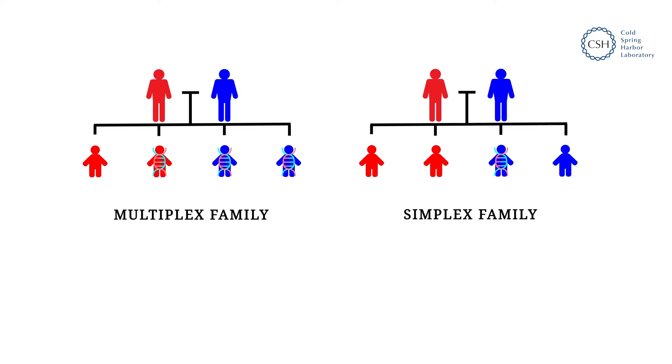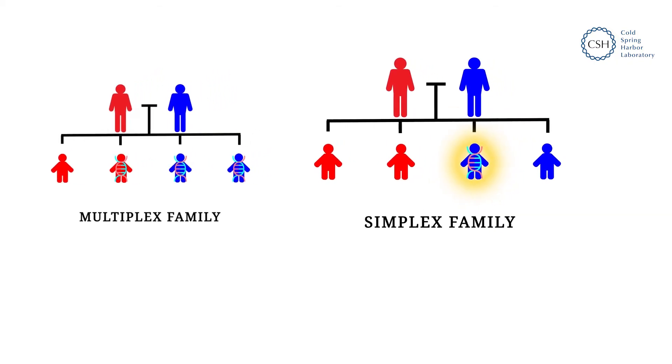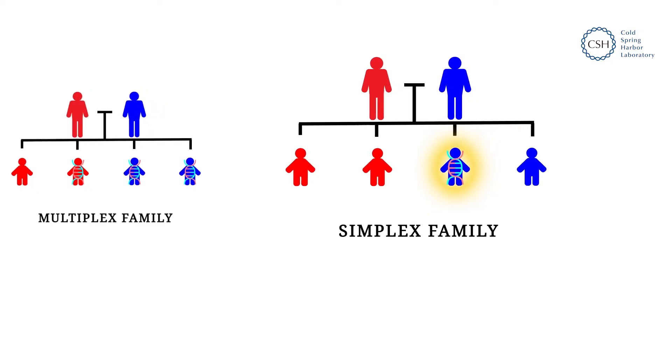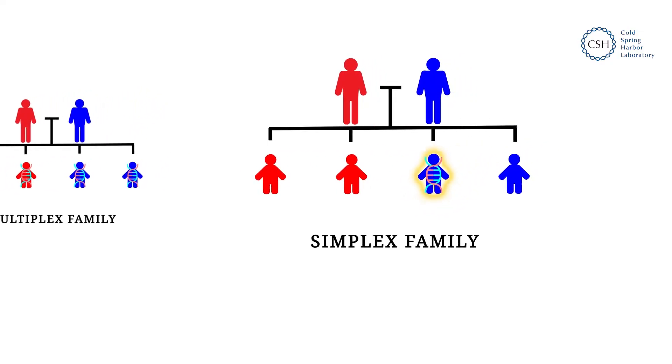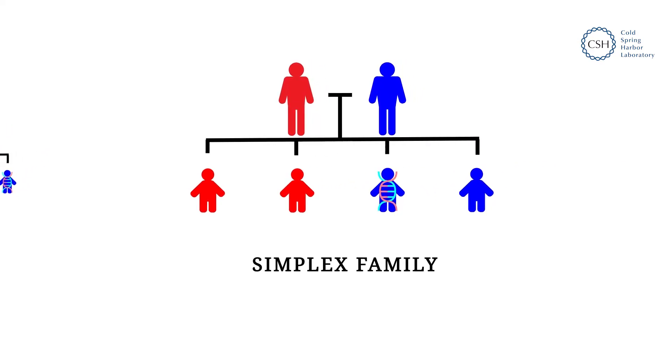Scientists have also observed that almost every family that has more than one child with ASD was at high risk for ASD. So, these families are also at high risk of having additional children with ASD. Such families are called multiplex families. On the other hand, families that have only one child with ASD were at low risk for ASD, and therefore have a much smaller chance of having additional children with ASD. These families are called simplex families.